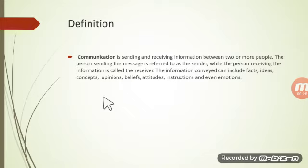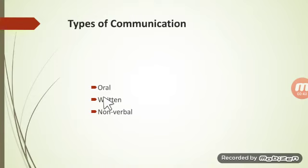Communication involves the sender, receiver, and the information. The person sending the message is referred to as the sender, and the person receiving the information is called the receiver. The information may include opinions, concepts, thoughts, instructions, and anything else. There are many types of communication.